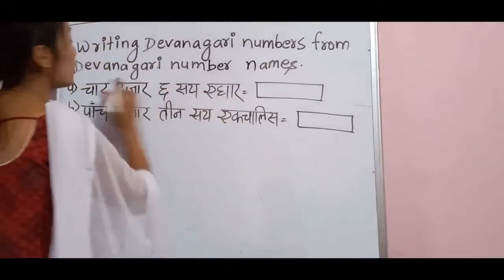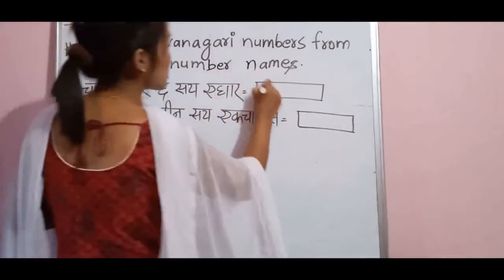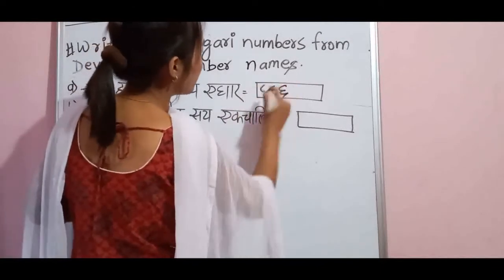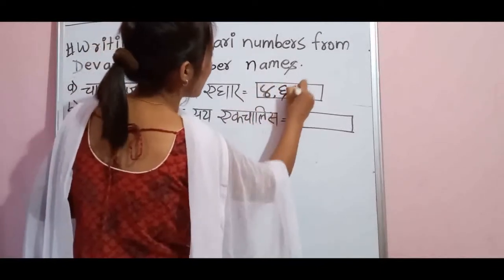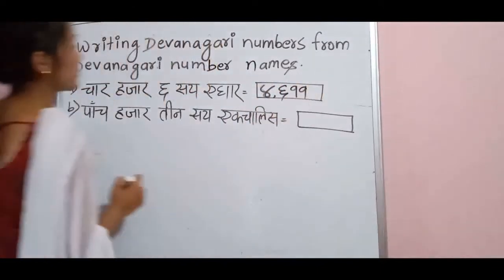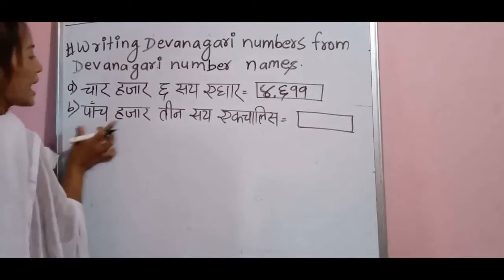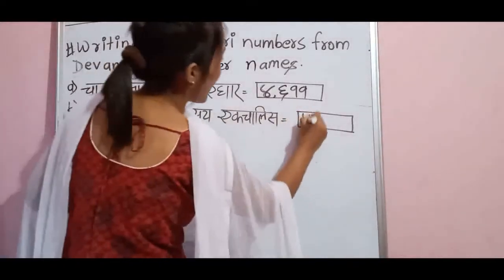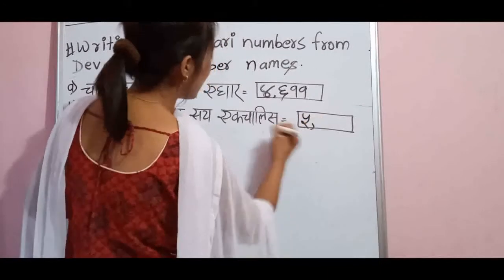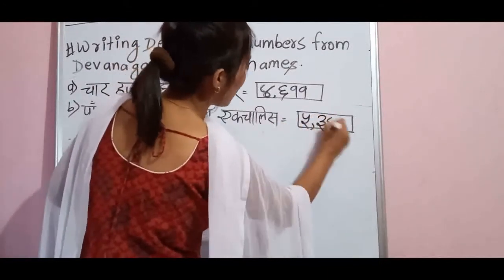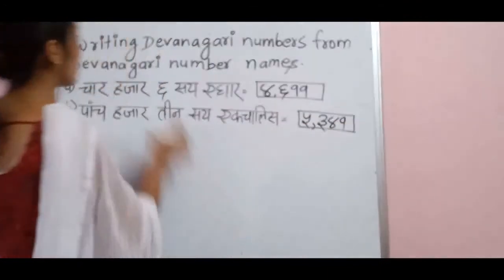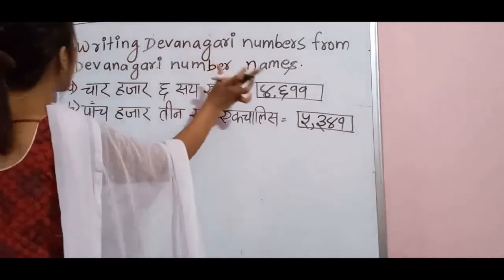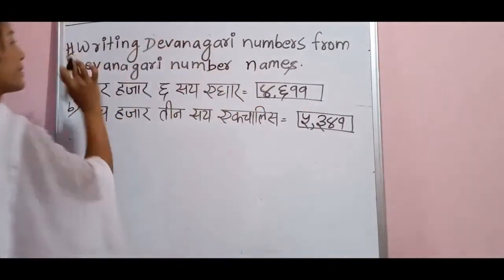For example, 4611 — what do we have to do? Write its Devanagari number: 4611. After that, number B: 5341. Write its Devanagari number: 5341. So this is the way to write the Devanagari numbers from the Devanagari number names.